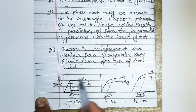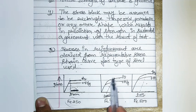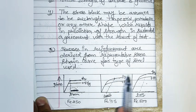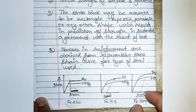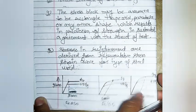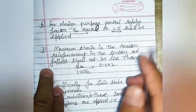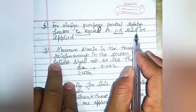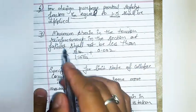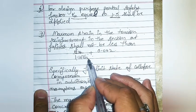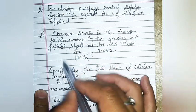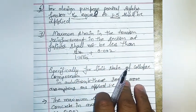For mild steel we have a definite yield point, but for tor steel we do not have a definite yield point, so we take the yield point at 0.2% proof stress. The partial safety factor for design purposes is taken as 1.5. The maximum strain in tension reinforcement at failure should not be less than fy/(1.15·Es) + 0.002.